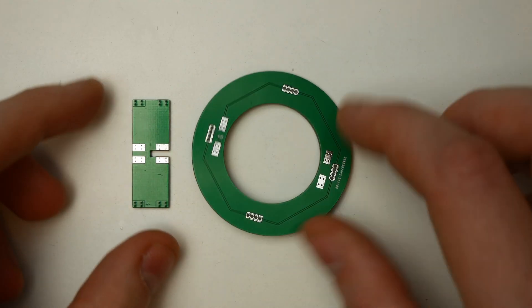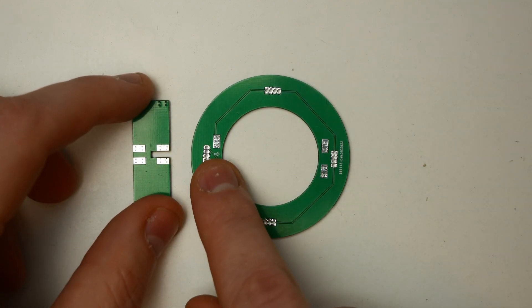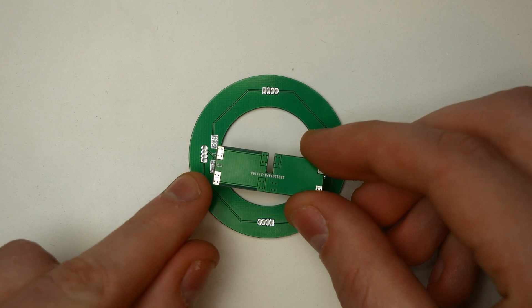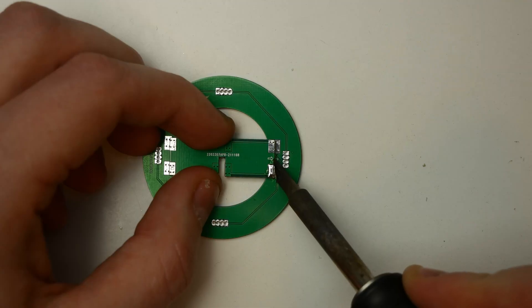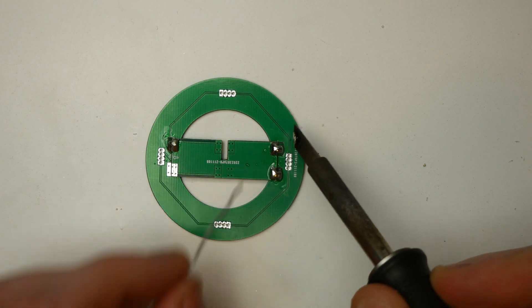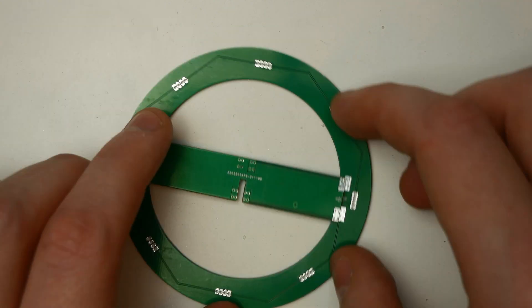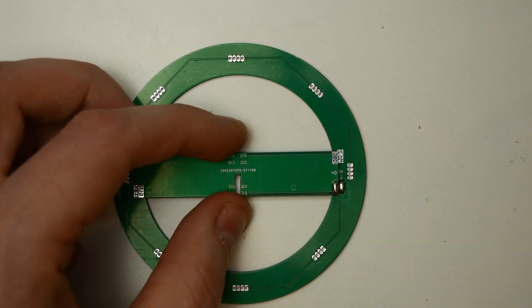First the branches have to be soldered to the rings. To do this there are small arrows on the back of the ring and the branch where they have to be aligned. Then the two boards are soldered together at the soldering points. Due to the height difference a little more solder may be used here. Then the whole thing is repeated for the second ring and branch.